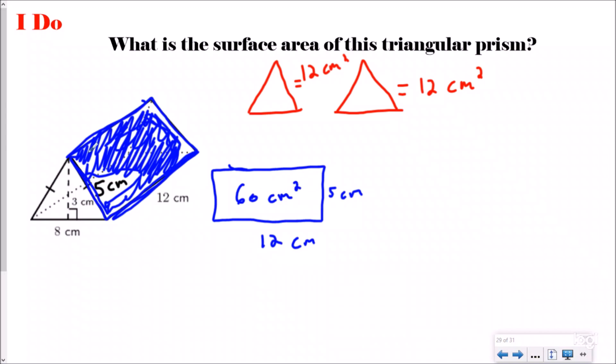Now the opposite side of the triangle is actually going to be the same because I see this dash right here and this dash, which means if this is 5, that's also 5. So I'm going to draw another side of my triangle, or another face, sorry, the opposite face.